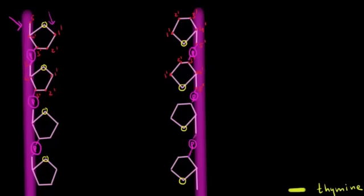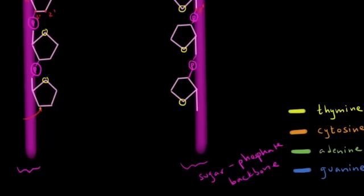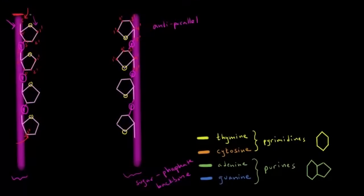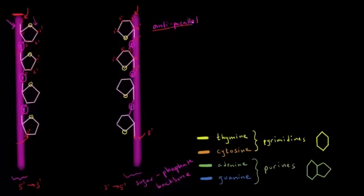Notice that these two strands are oriented in opposite directions — they are what we call anti-parallel to each other. The oxygens on the left strand are pointing upwards; on the right strand they're pointing downwards. If we pick the top as a reference point, on the left strand there's a 5 prime carbon at the top and a 3 prime carbon below — so this strand goes in the 5 prime to 3 prime direction. On the other strand, at the top we have a 3 prime carbon and at the other end a 5 prime carbon — so it goes 3 prime to 5 prime. The strands are anti-parallel to each other.